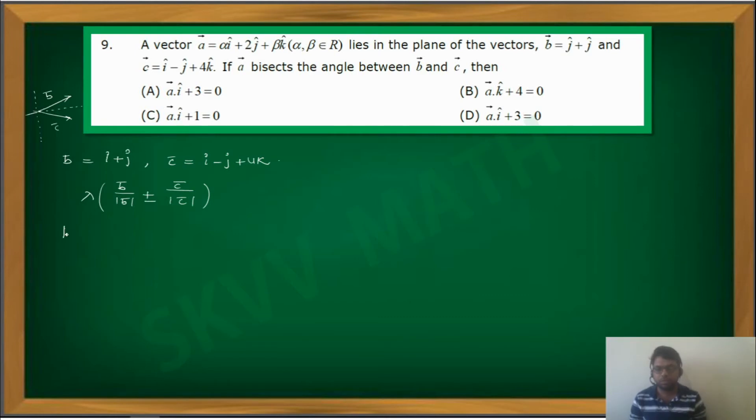Now can we find first what is mod b bar? Mod b bar equals square root of 1 plus 1, which equals root 2. This is simple basic, I think you know this. So modulus of c bar, under root of 1 plus 1 plus 16, which is root of 18. If you want, you can write as 9 into 18. Therefore, 3 root 2. So this is what we got, mod c bar.